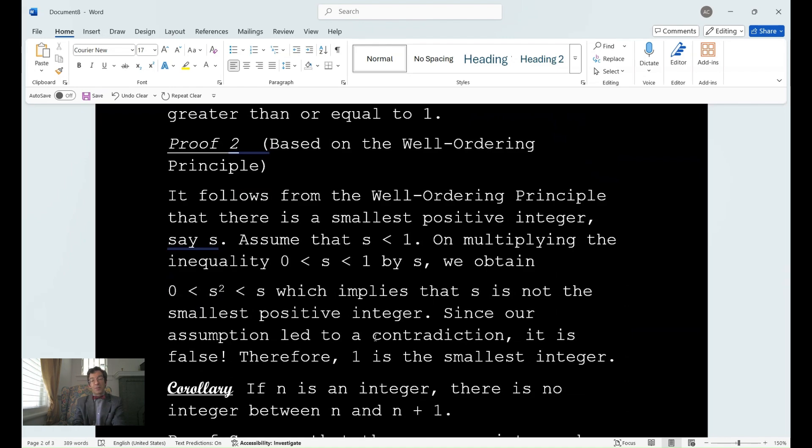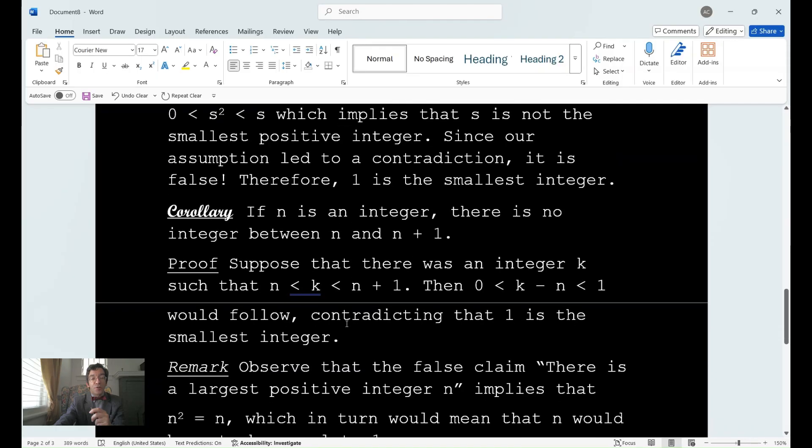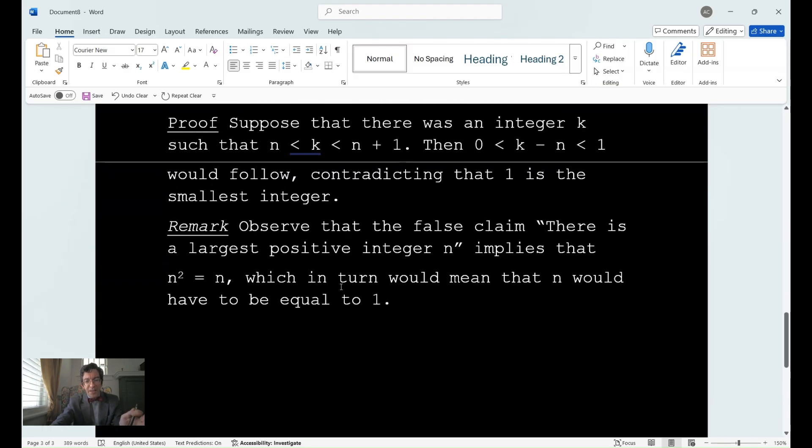A corollary to this: If n is an integer, there is no integer between n and n + 1. What is the proof of that? I said that suppose that there was an integer k, such that n < k < n + 1. Well, that means 0 < k - n < 1 would follow, contradicting that 1 is the smallest integer. And then I put here remark, observe that the false claim there is a largest positive integer n implies that n² = n, which in turn would mean that n would have to be equal to 1.